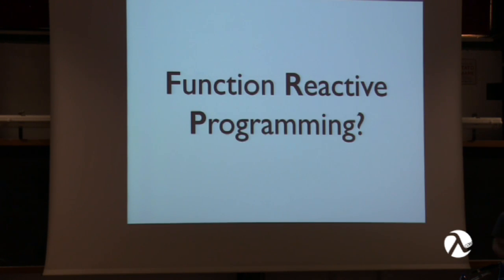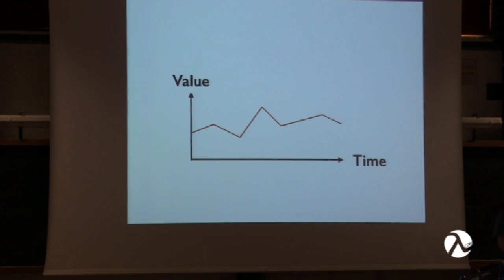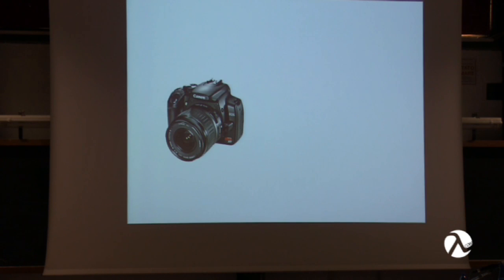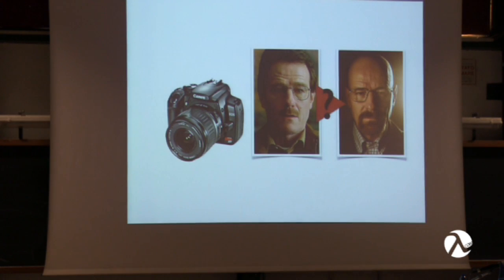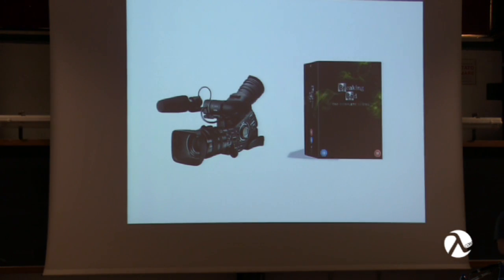For me, the easiest way to describe functional reactive programming is having value over time — if you can capture the time axis with your data structure, you not only have a point-in-time snapshot of the value, but the whole entire history of all values it's had in the past. In Elm, this is called a signal. Think of it like the difference between a camera snapshot versus a video camera: with a snapshot you don't know how Mr. White turned into Heisenberg, but with video you get five glorious seasons of Breaking Bad.